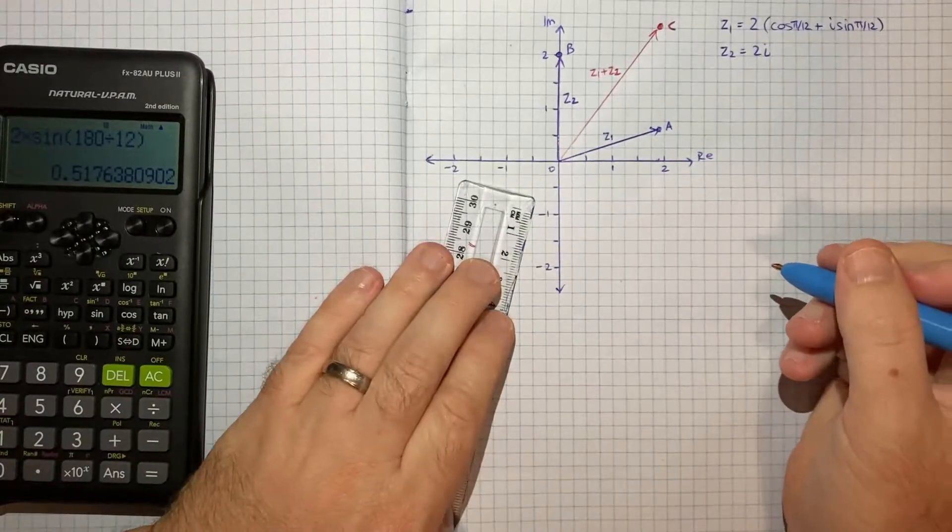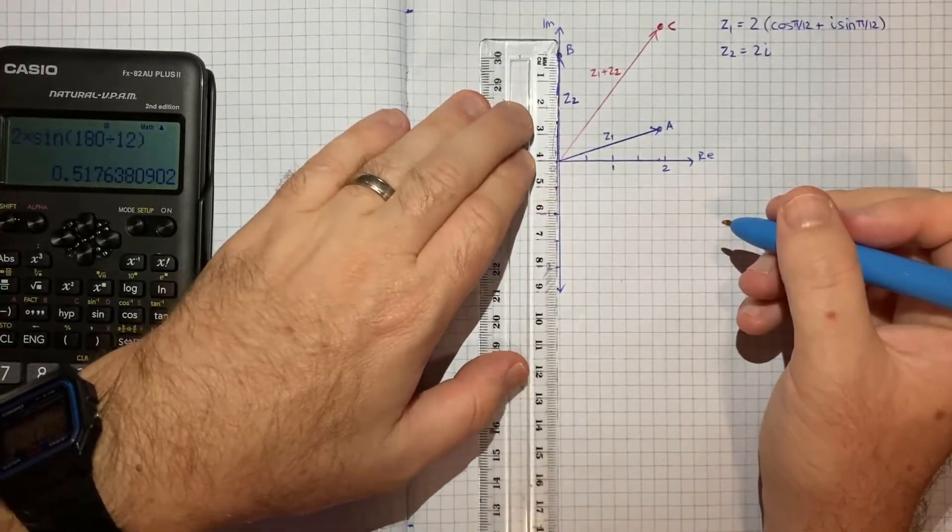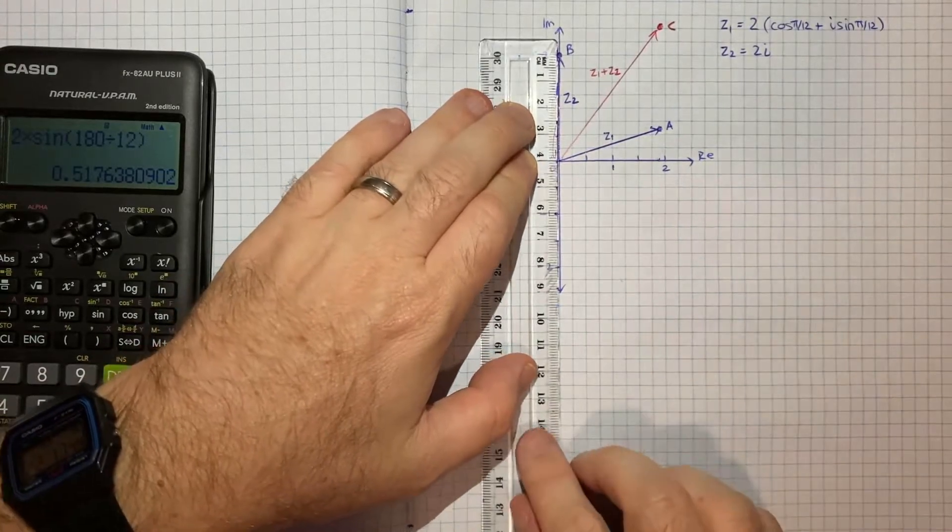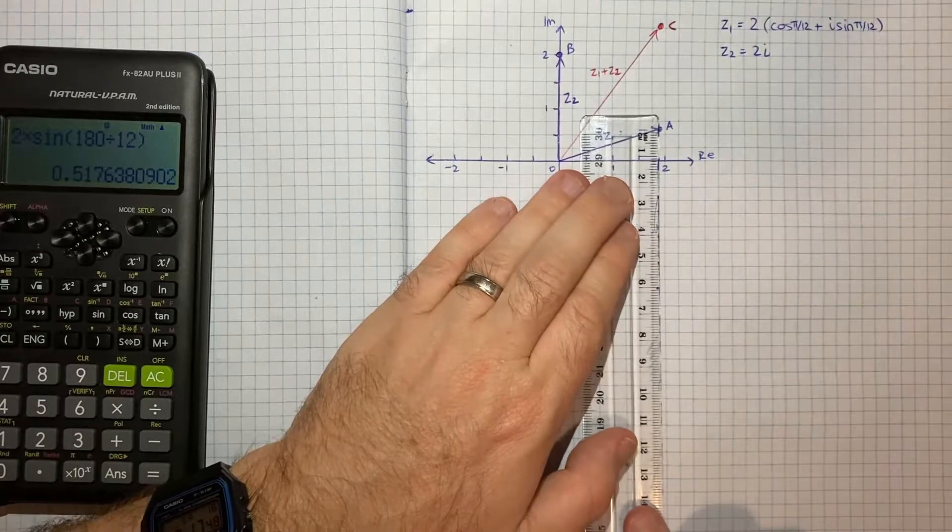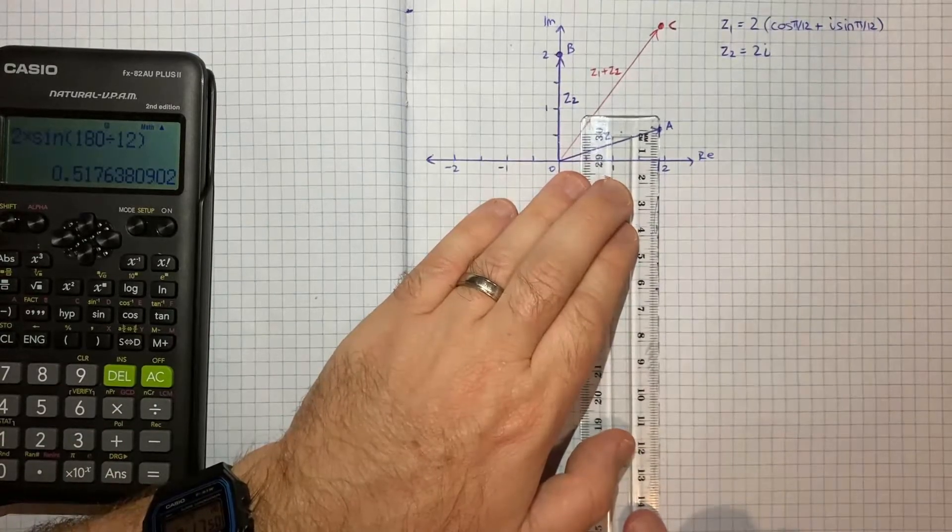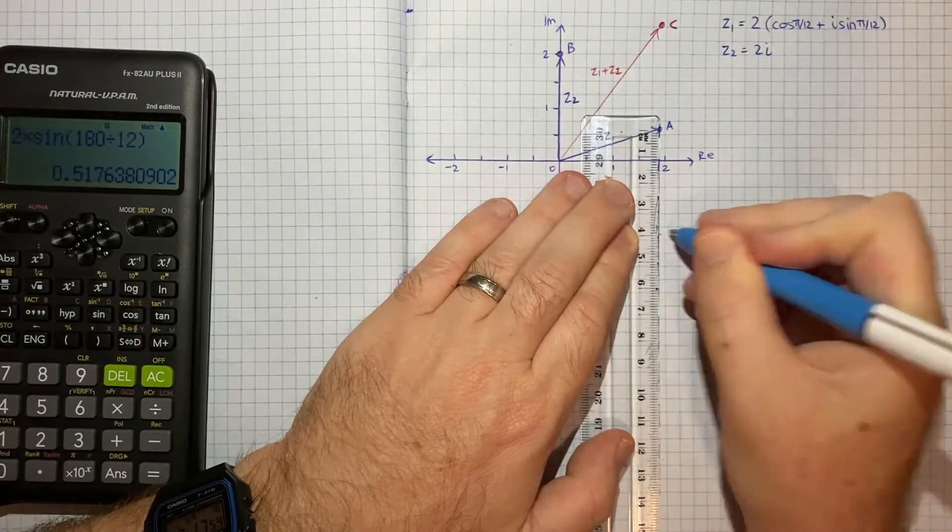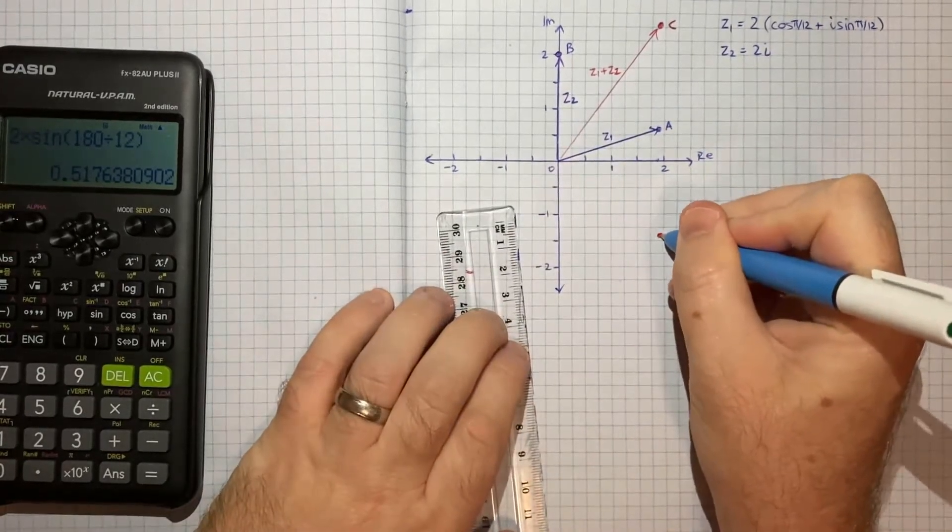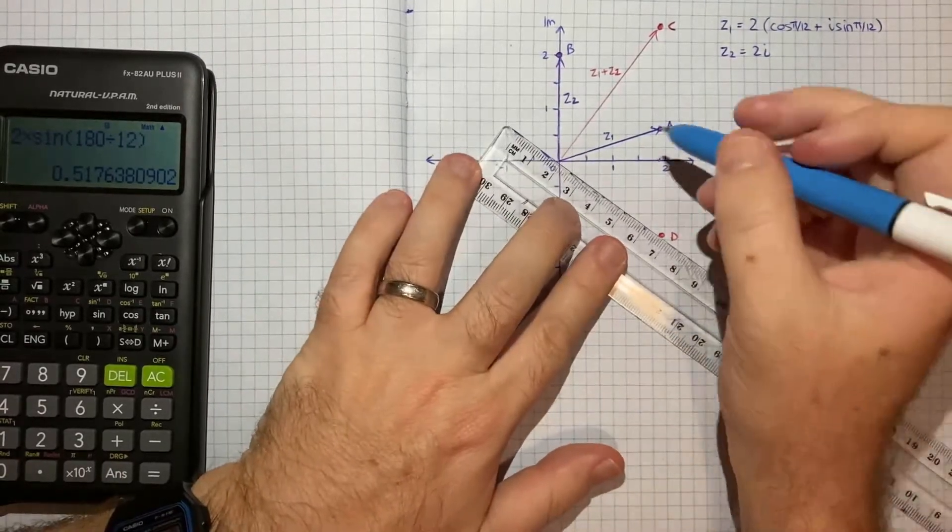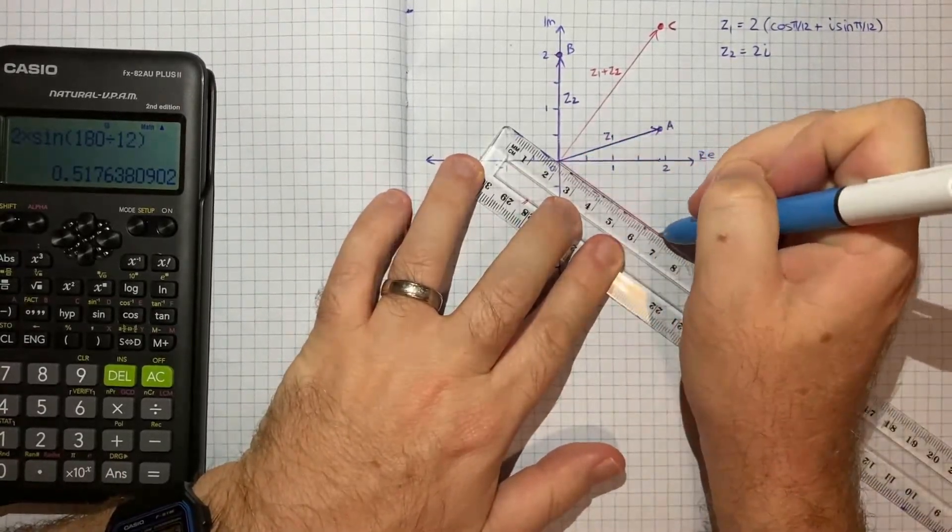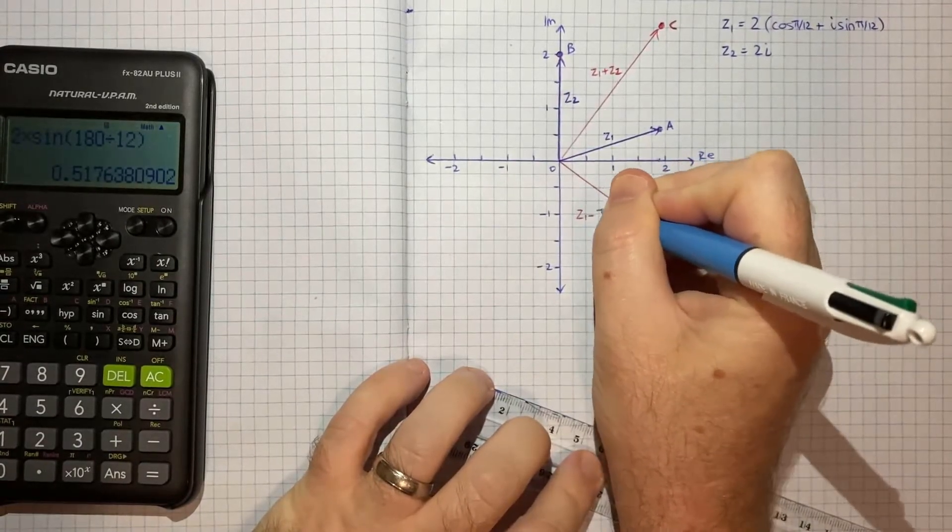And similarly, we can take the magnitude of this vector z2, and instead of coming up, we can come down. In other words, do the opposite direction, and that's in effect negative z2. So where we end up, this point here, which I'll call point D, the origin to that point is z1 minus z2.